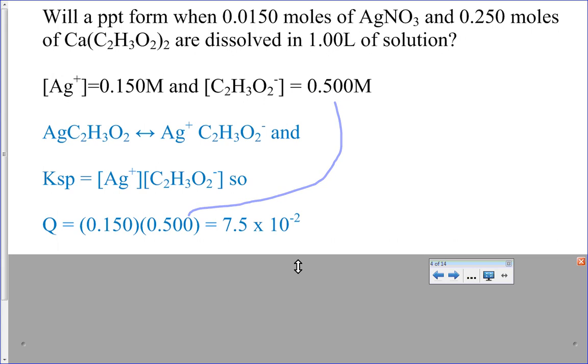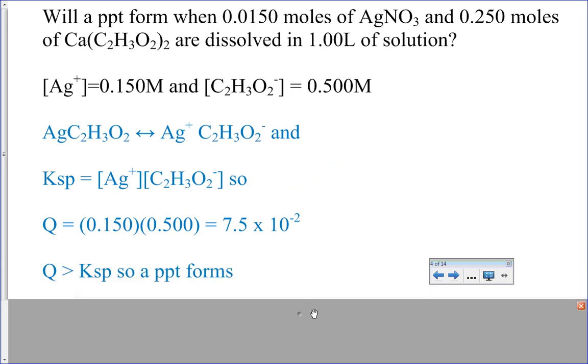When I compare this with the one from the table, I find out that Q is greater than KSP, so a precipitate will form.